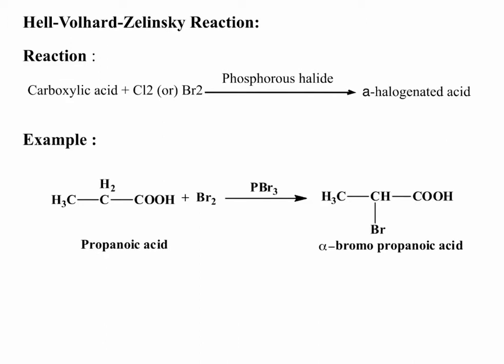For example, propanoic acid reacts with bromine in the presence of phosphorous tribromide as the catalyst. The obtained product is α-bromopropanoic acid.